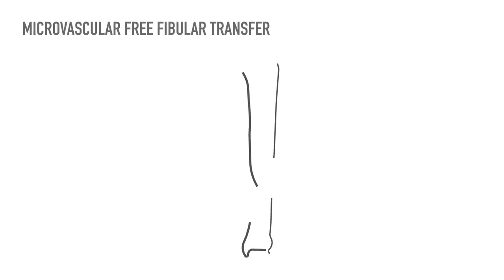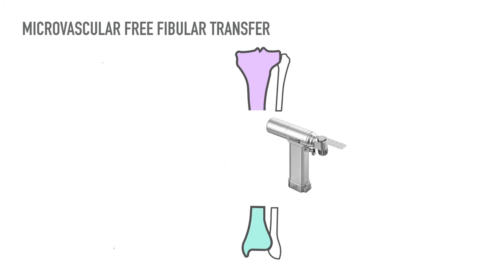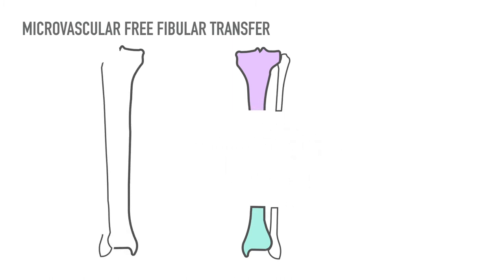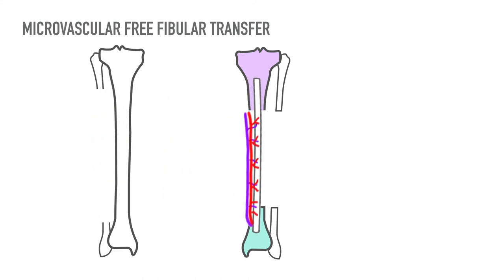Microvascular free fibular transfer involves radical excision of the pseudoarthritic segment, followed by harvesting a long segment of the opposite fibula along with its vascular pedicle. The vessels of the transferred fibula are anastomosed to the local vessels, and the transferred fibula is fixed securely to the tibia.